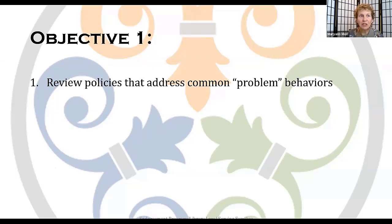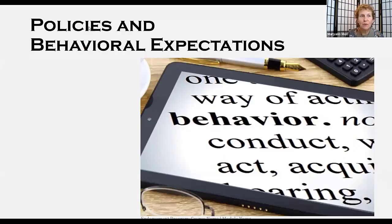Let's dive right in with our first learning objective about reviewing library policies that address so-called problem behaviors. This class won't be going into details about how to write policies — there's another module that covers that topic. But we will remind you that your library's ordinance, that legal document that stipulates the authority of your library board, gives your trustees the authority to approve policies. It is the director's job, through the actions of all staff, to ensure that the library's policies are enacted and enforced. Per the accreditation program standards, your policies should be reviewed by your library board every three years.